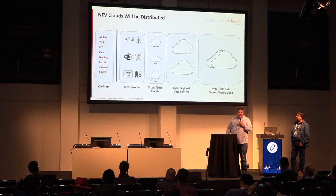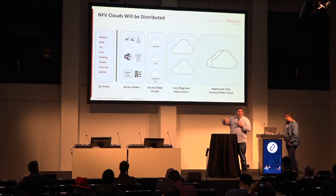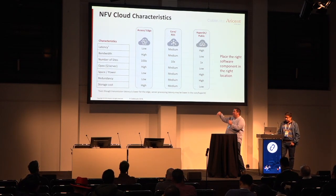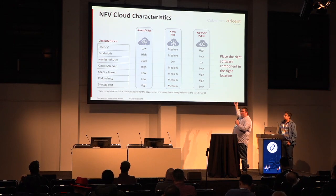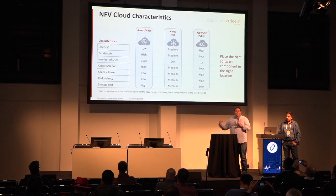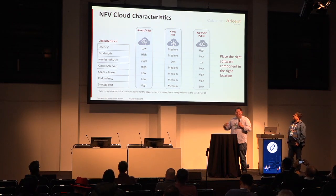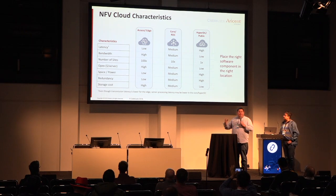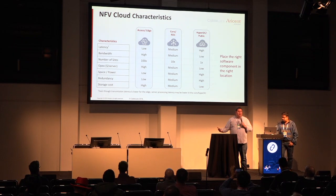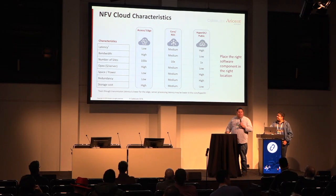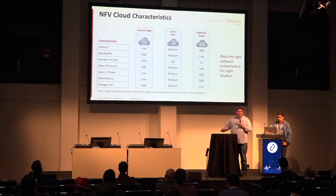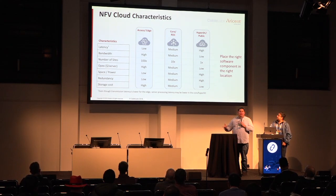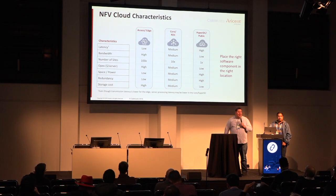Then there are core and regional data centers and hyperscale. Why do you want to look at these different areas? The more centralized you are, the less expensive it is to run, but you also have more latency. If you're trying to render things for VR goggles and the host is 50 milliseconds away, you're going to get queasy. You want something within 40 kilometers or less — very close to your house — for low-latency or high-bandwidth applications. You don't want a bottleneck anywhere on the network.